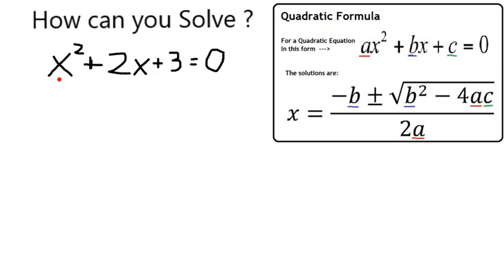Here we have a quadratic equation, and usually the easiest way to solve them is by factoring. So if we look at 3, we want to see if we can find factors of it which add up to 2. But the only factors of 3 are 3 and 1, which do not add up to 2.